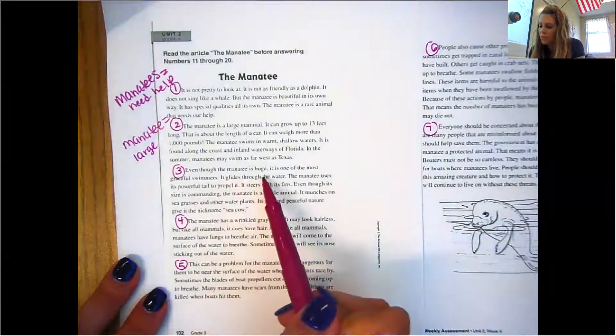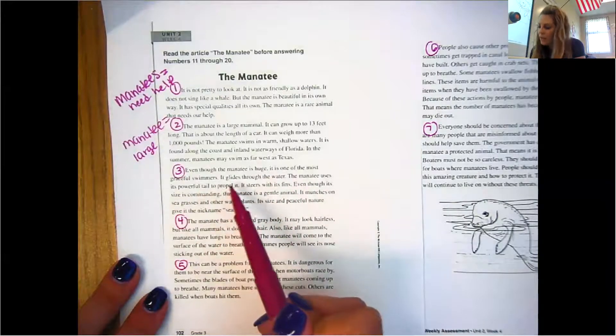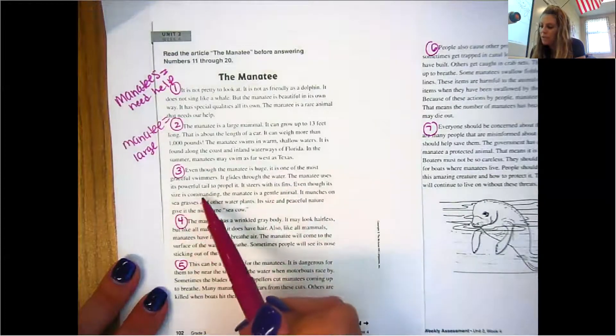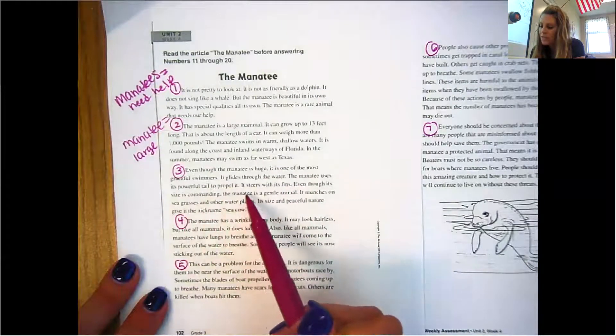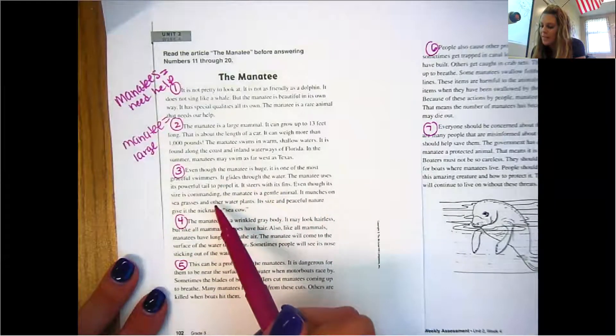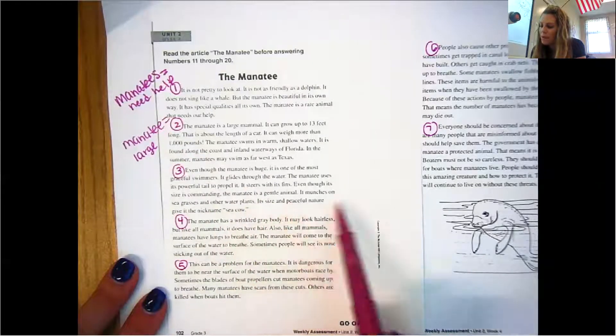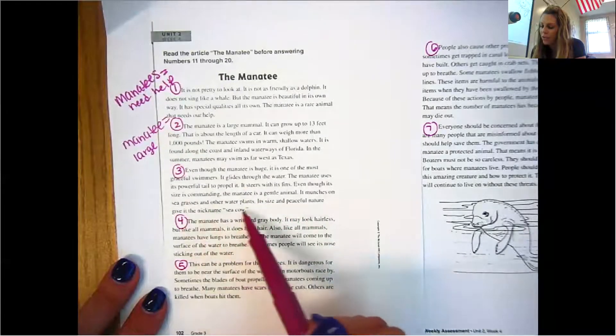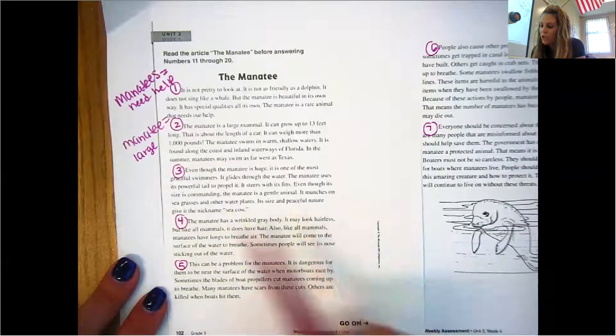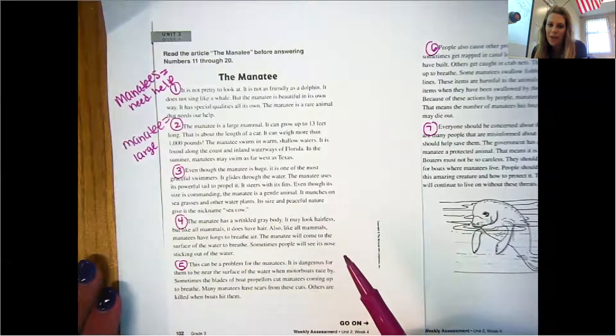Even though the manatee is huge, it is one of the most graceful swimmers. It glides through the water. The manatee uses its powerful tail to propel it. It steers with its fins. Even though its size is commanding, the manatee is a gentle animal. It munches on seagrasses and other water plants. Its size and peaceful nature give it the nickname, sea cow, okay?